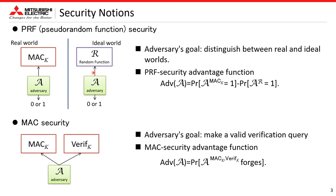The first one is PRF security. The PRF security game is the indistinguishability between the real and ideal world. In the real world, an adversary interacts with the target MAC, and in the ideal world, interacts with a random function. After the interaction, an adversary returns a decision bit. This is the advantage function of PRF security, which is the difference of the probability that an adversary returns 1 in the real world and in the ideal world.